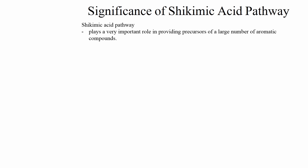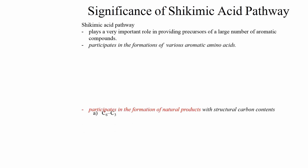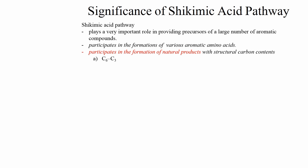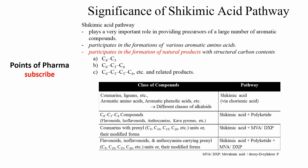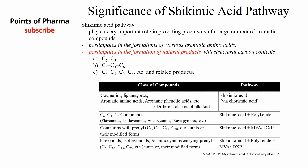Significance of Shikimic Acid Pathway: Shikimic Acid Pathway plays a very important role in providing precursors for a large number of aromatic compounds. Shikimic Acid Pathway participates in the formation of various aromatic amino acids. It also participates in the formation of natural products with structural carbon content C6-C3, C6-C3-C6, C6-C3-C6-C3-C6, and C6-C6-C3-C6 and related products.